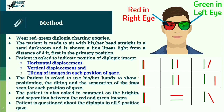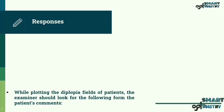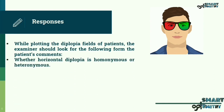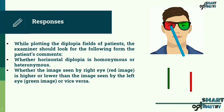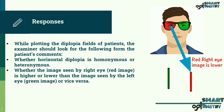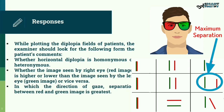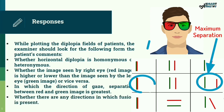Patient is questioned about diplopia in all nine positions of gaze. While plotting the diplopic fields, the examiner should look for the following: whether horizontal diplopia is homonymous or heteronymous; whether the image seen by the right eye (the red image) is higher or lower than the image seen by the left eye (the green image) or vice versa; in which direction of gaze the separation between the red and green image is greatest; and whether there are any directions in which fusion is present.